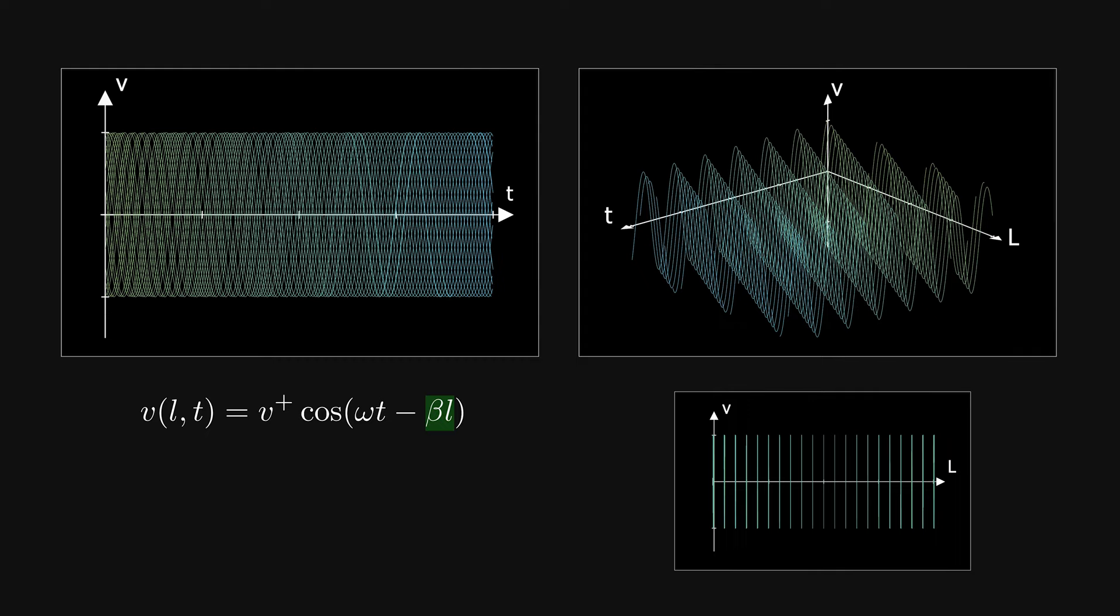If beta is equal to zero, there wouldn't be any delay along the line. Beta is equal to 2π over the wavelength. That confirms that the larger the wavelength of the signal, the less would be the delay.